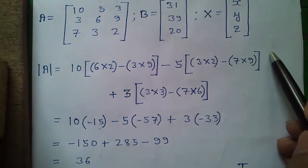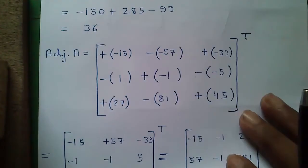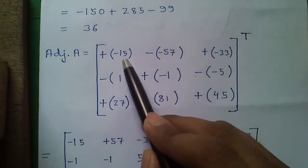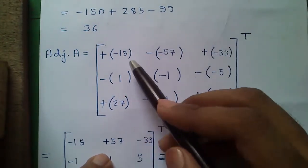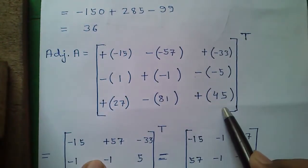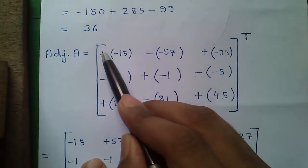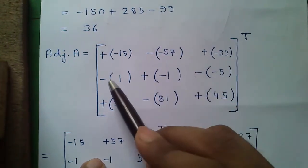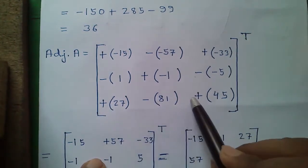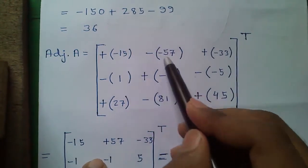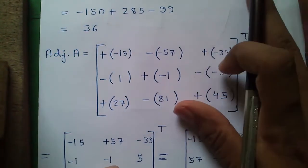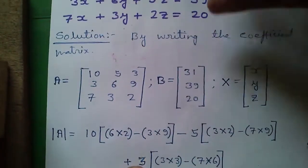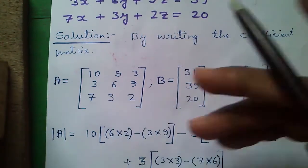Next we will find the adjoint of A. First we write a 3×3 matrix structure, then write the sign pattern: plus, minus, plus, minus, plus, minus, plus, minus, plus — that is the alternating order of plus and minus. We leave blank brackets and will fill in the cofactor values.